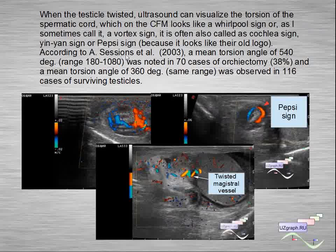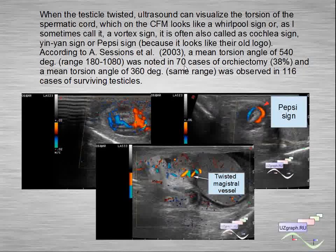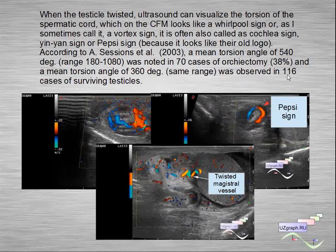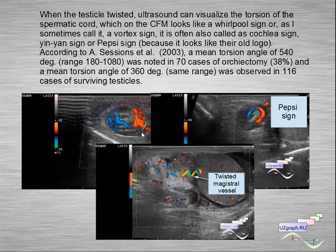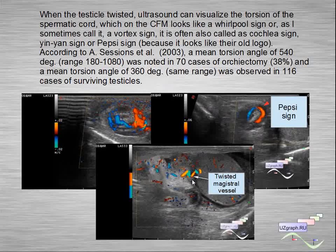According to one study, a mean torsion angle of 540 degrees was noted in 70 cases of orchiectomy, and a mean torsion angle of 360 degrees was observed in 116 cases of surviving testicles. We can see further examples of the whirlpool sign, cochlear sign, or Pepsi sign, showing twisted magistral vessels in the case of torsion of the spermatic cord.